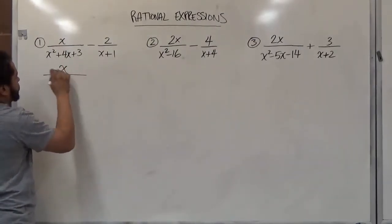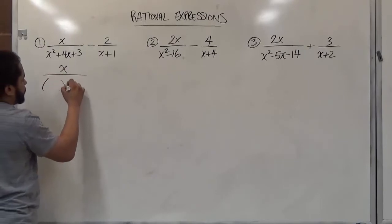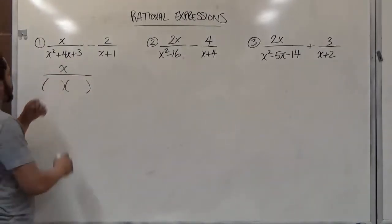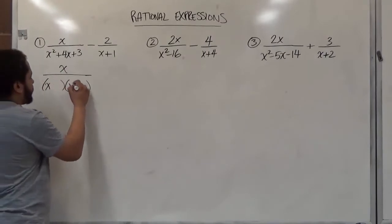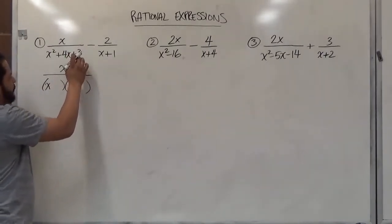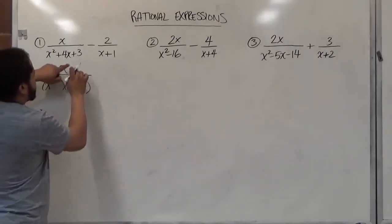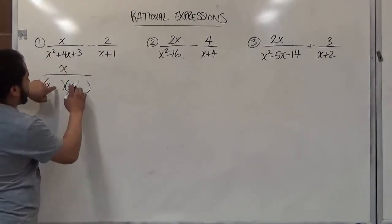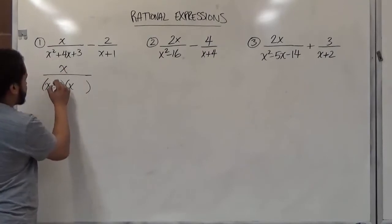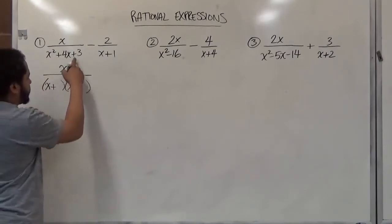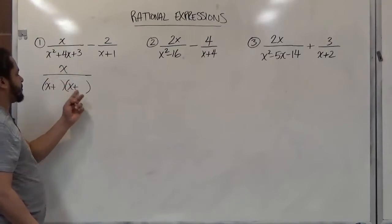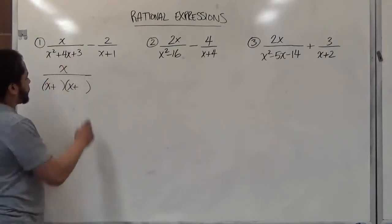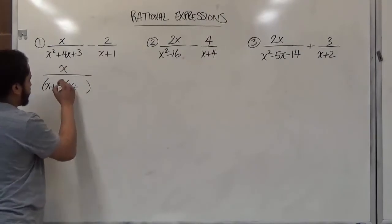Let's start by factoring the left-hand side. We have x over a trinomial, so we're looking for factors of three that add up to four. Because the third term is positive and the middle term is also positive, both factors share the same sign — both positive. The factors of three that add up to four are three and one, giving us (x+3)(x+1).